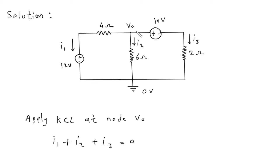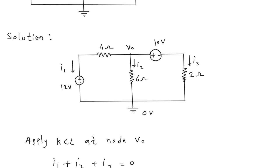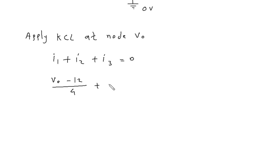I1 is equal to Vo minus 12 over 4 plus I2. I2 is Vo minus 0 over 6, so directly Vo over 6 plus I3.